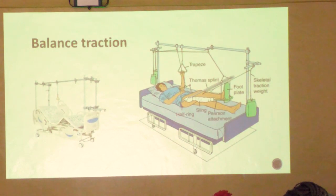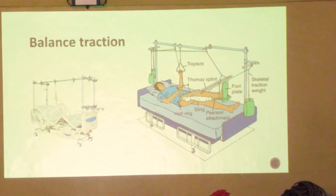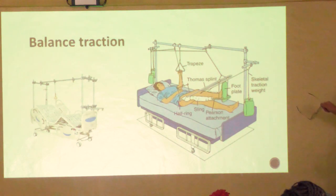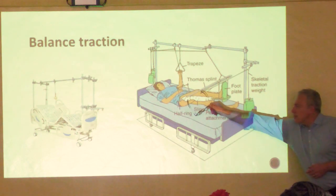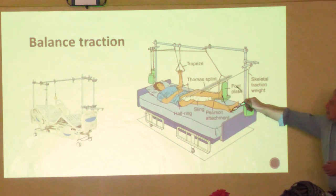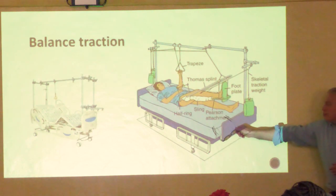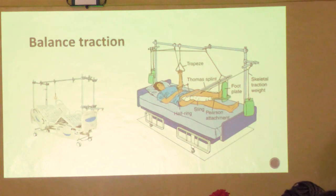Specialised balanced traction beds can be monetised in the west - a bed like this will cost fifteen to twenty thousand dollars. It has all the components of a balanced traction system: a trapeze so the patient can lift themselves, a Thomas splint to pull the fracture straight, a Pearson attachment allowing knee flexion and hip flexion, and a specialised mattress to prevent decubitus ulcers.